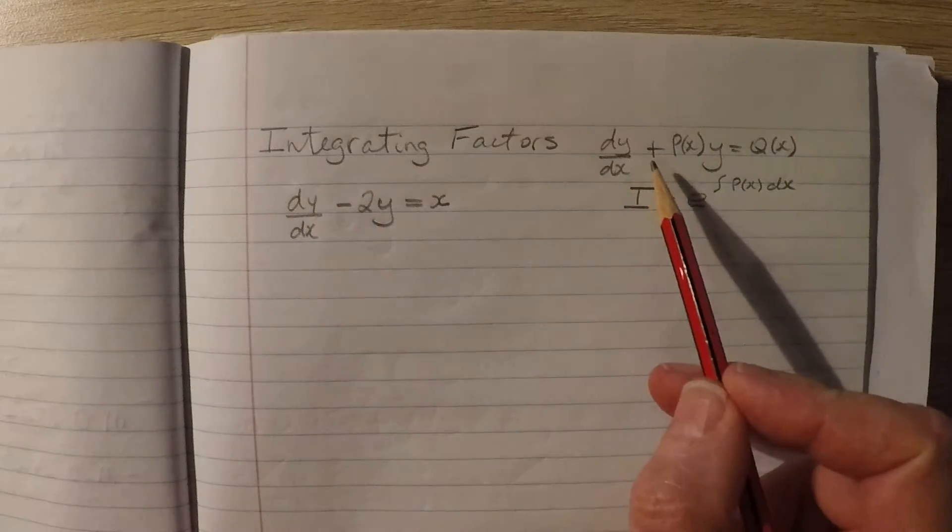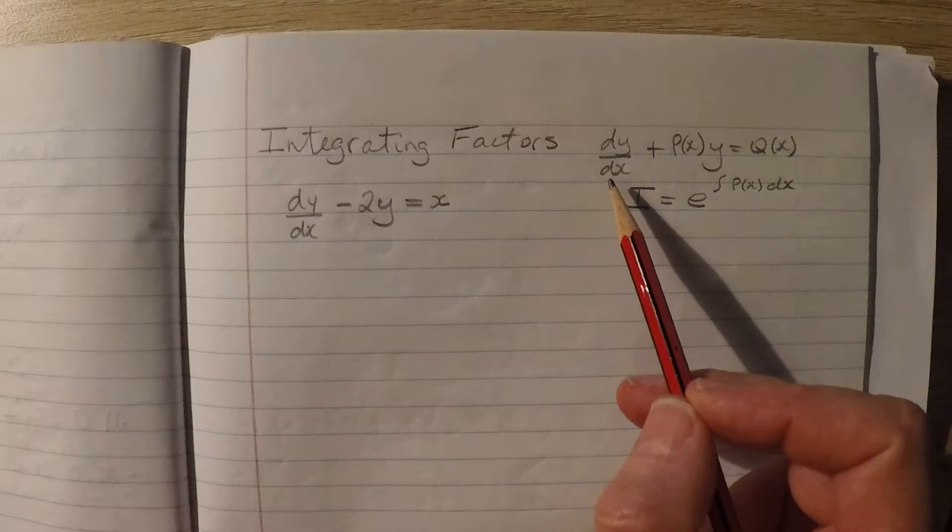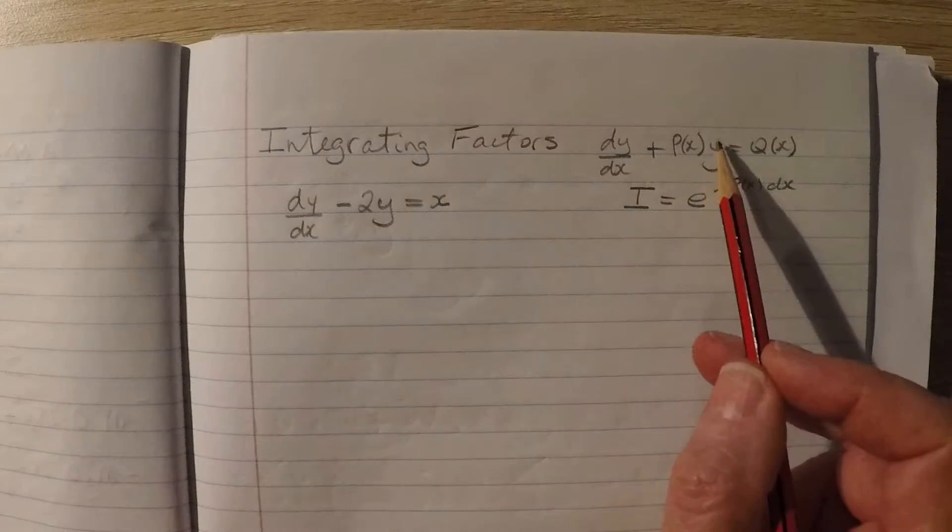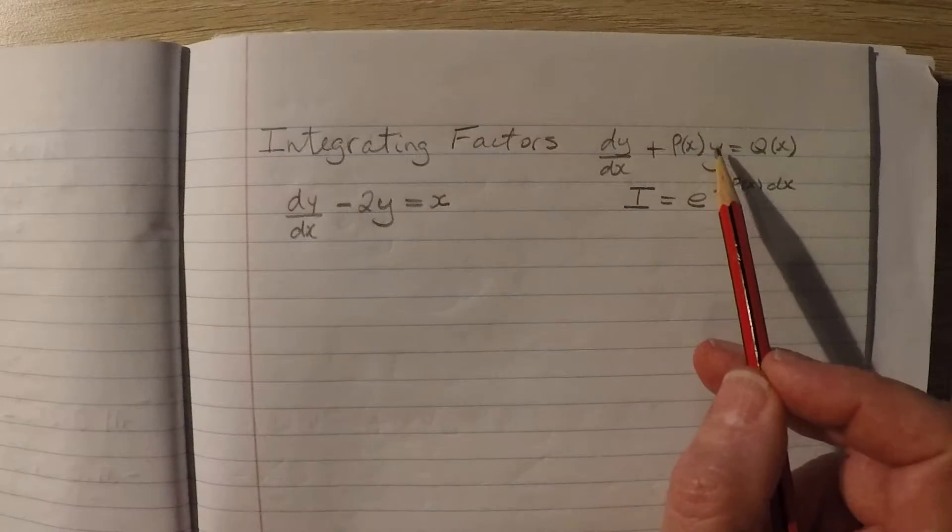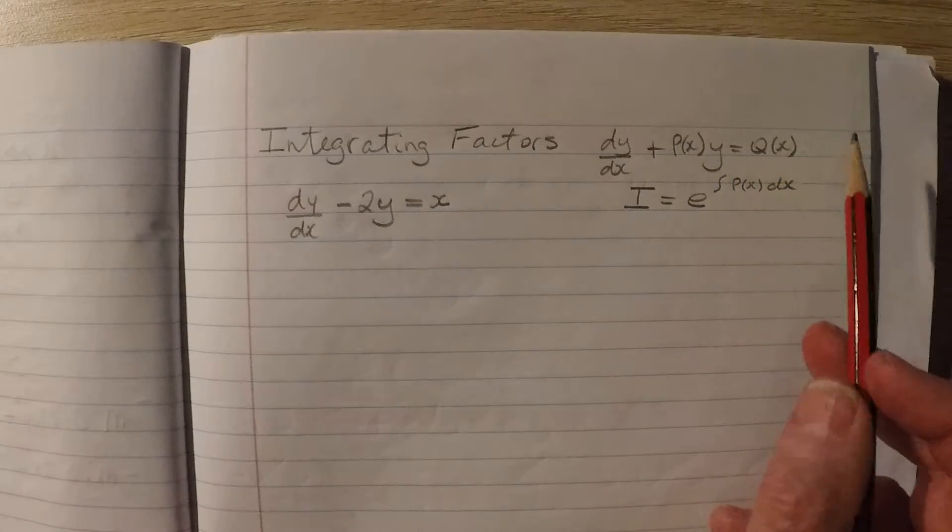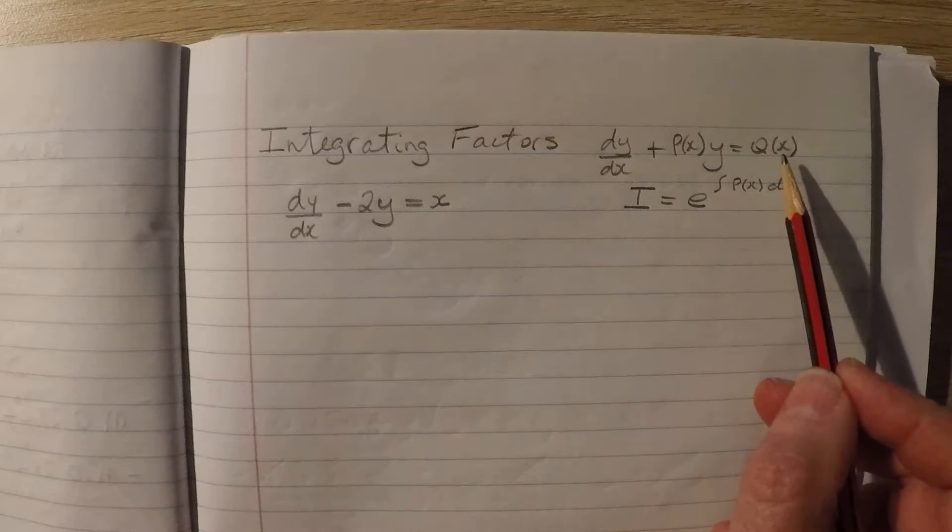This is the general form that we're looking at. So we have a first derivative, a first order differential equation, and a linear factor of the variable y, so some function of x equals some other function of x. Remember p and q could be constants, or they could be functions involving x.